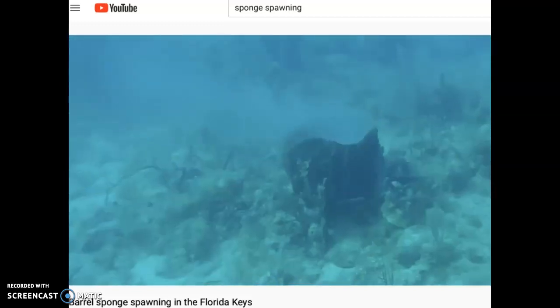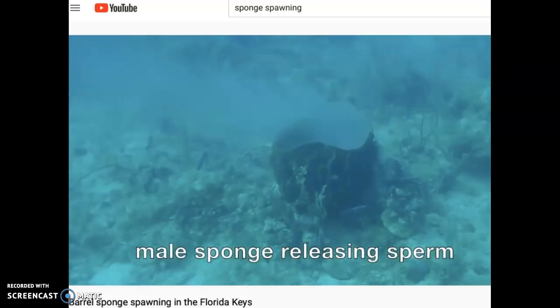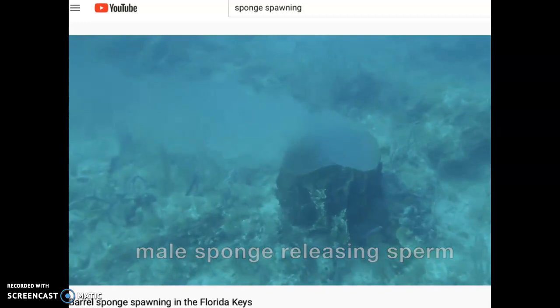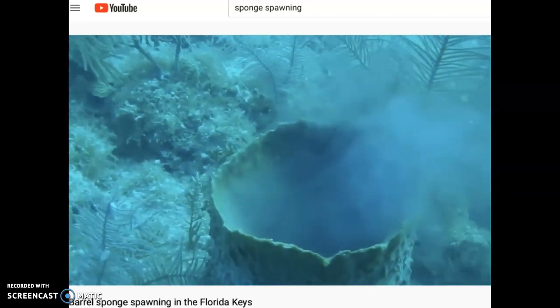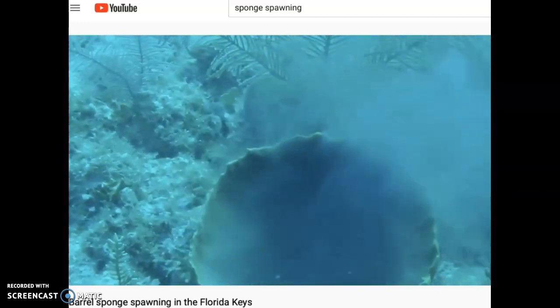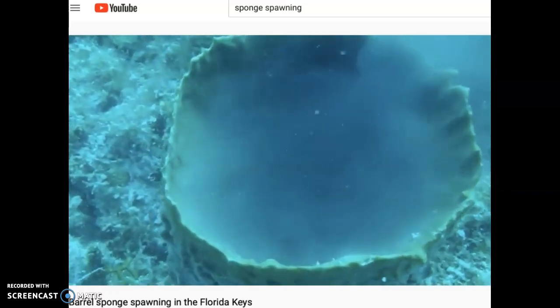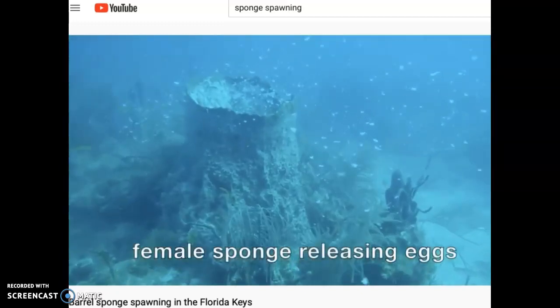So, there's your barrel sponge. Looks like a big barrel. And that guy is releasing sperm. It's just this cloud of smoke, what appears to be smoke, going up into the water column. Billions and billions of sperm.